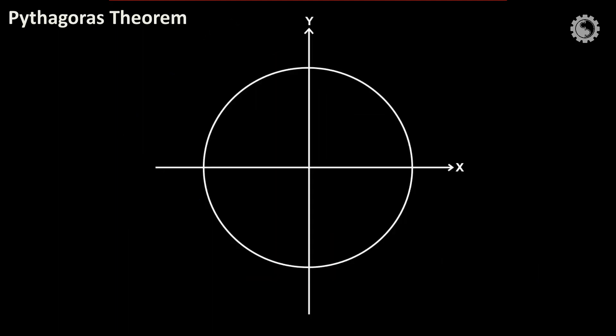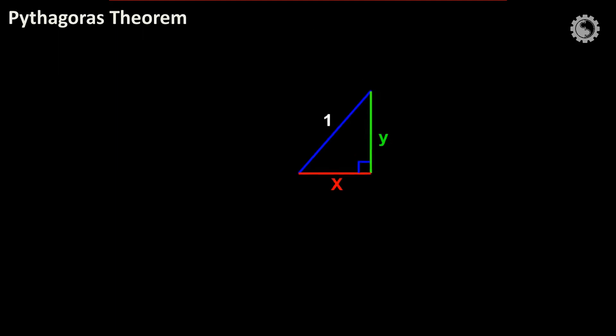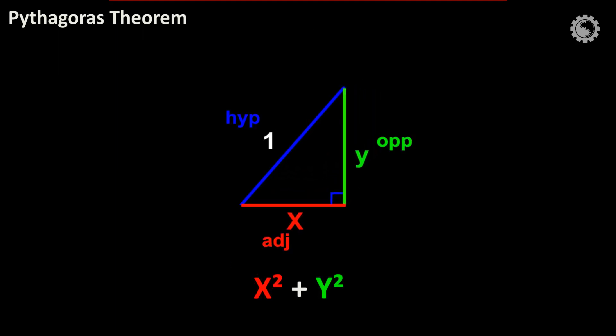Consider a right angle triangle on the unit circle, where opposite is y, adjacent is x, and hypotenuse is 1 in the unit circle. It is applicable to the Pythagorean theorem that x squared plus y squared equals 1.